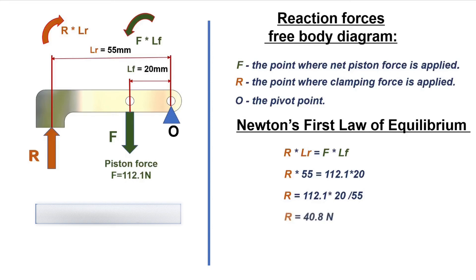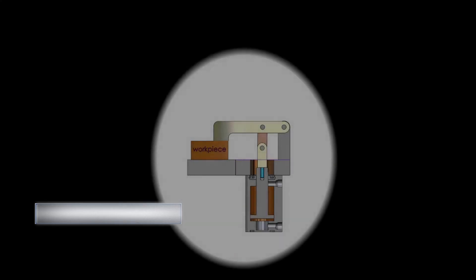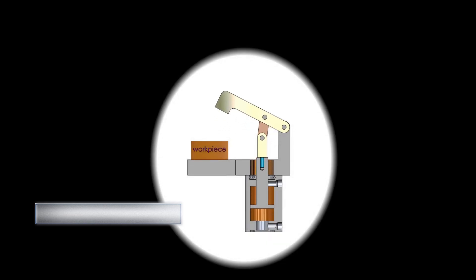So this power clamp cylinder can guarantee clamping force R equals 40.81 Newtons. I hope you will find this video useful. If you like this video, please subscribe to more content like this in the future. Thank you for watching.